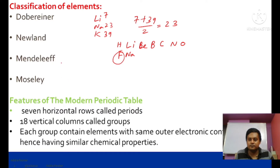The third is Mendeleev's periodic law: the physical and chemical properties of elements are a periodic function of their atomic weight. According to Mendeleev, there were 8 groups (1 to 8), with groups 1–7 having two subgroups (1A, 1B, etc.). Group 8 contained three triads: iron, cobalt, nickel; ruthenium, rhodium, palladium; osmium, iridium, platinum. Modern periodic law states: physical and chemical properties are a periodic function of atomic number.